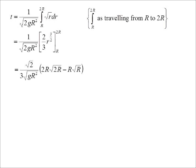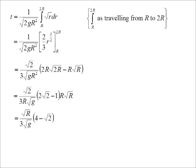In the brackets, sub 2R in, I'll get 2R root 2R, minus sub R in, I'll get R root R. Factorize, I've taken out R root R. I'm left with 2 root 2 minus 1. Put the root 2 back in, I get 4 minus root 2. R cancels with the R, and I have root R.